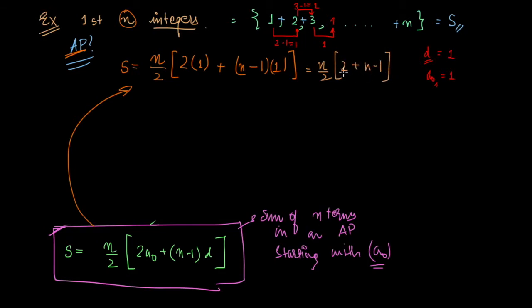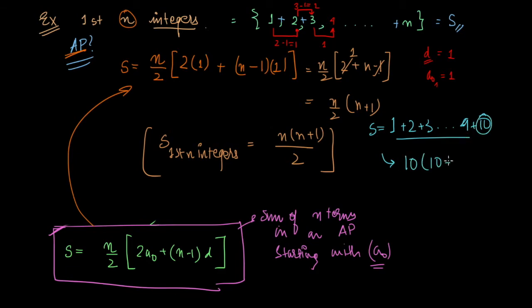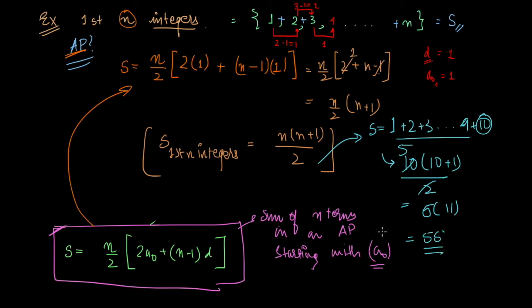Simplifying: 2 + (n−1) = n + 1, so S = (n/2) × (n + 1) = n(n+1)/2. This is the sum of the first n integers. For example, summing 1 through 10: substituting n = 10 gives 10 × 11 / 2 = 5 × 11 = 55. That is the sum of n terms in an AP and an example of how to use it.